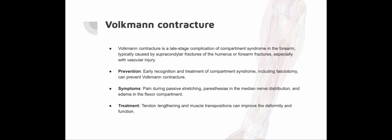Volkmann's contracture: Volkmann's contracture, a late-stage complication of compartment syndrome in the forearm, results from prolonged extensive pressure on the muscle compartments, leading to muscle necrosis and fibrosis. It typically occurs following supracondylar fractures of the humerus or forearm fractures, especially when vascular injury is present. Early recognition of compartment syndrome including fasciotomy can prevent Volkmann's contracture. Symptoms include pain during passive stretching, paresthesias in the median nerve distribution, and edema in the flexor compartment. Treatment involves tendon lengthening and muscle transpositions to improve the deformity and functioning of the affected hand.